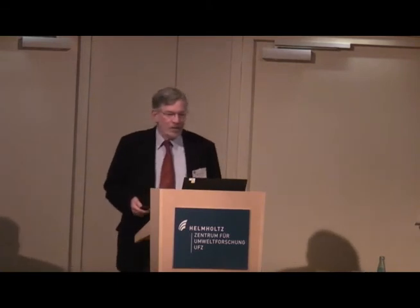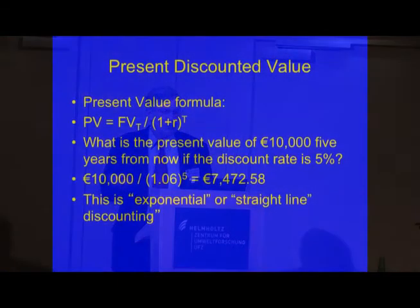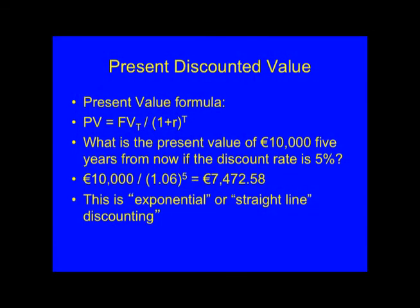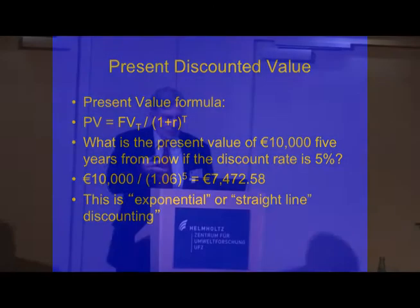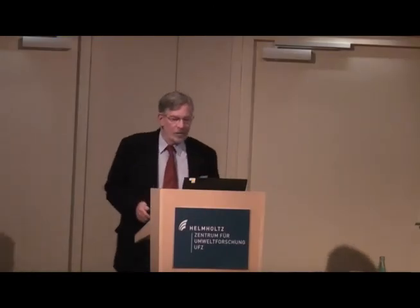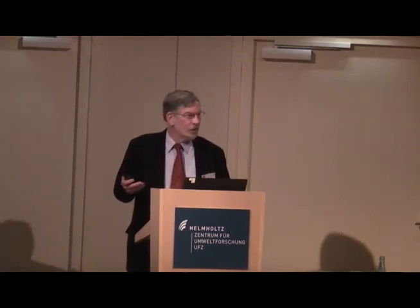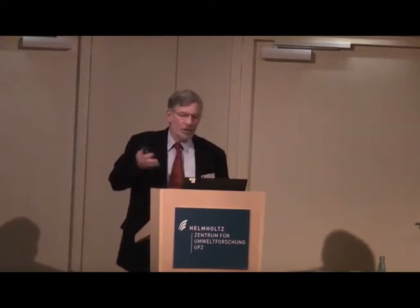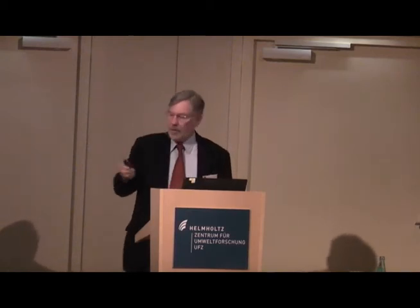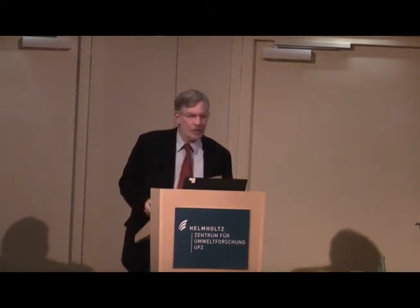This is the present discounted formula — straight-line discounting. What's the present value of 10,000 euros five years from now at a 5% rate? You plug in the formula, it turns out to be just over 7,400 euros. This is the standard approach, called exponential or straight-line discounting, where the same discount rate applies from year to year.